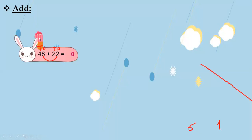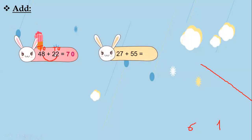Don't forget the carry. Now I will add 1 plus 4 plus 2. Don't forget the carry: 1 plus 4 equals 5, then 5 plus 2 — 5 in my mind and 2 on my fingers. After 5: 6, 7. So 48 plus 22 equals 70. Very good!